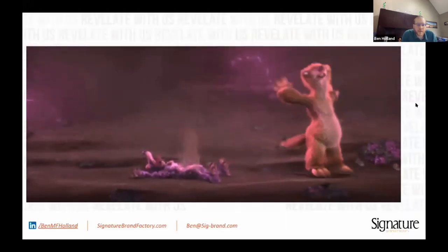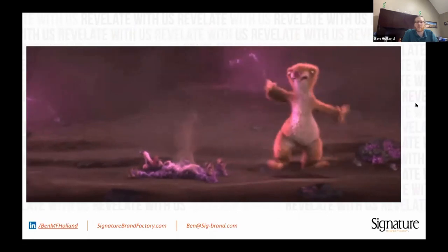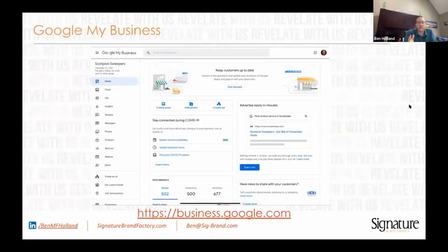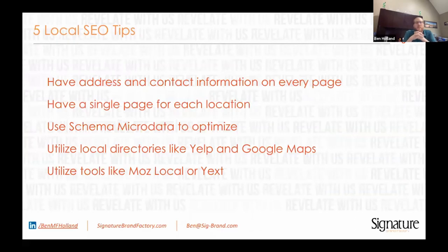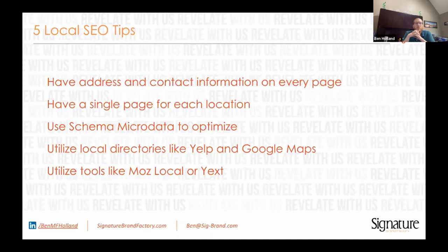I'd like to talk about my lightning round — just a few products I feel like everybody should know about. If you have a business, you should be set up on Google My Business — it helps with local SEO and is a good way to show up in Google Maps. Some local SEO tips: have your address and contact information on every single page, preferably in the footer; have a single page for each location; use schema micro data to optimize your website; use local directories like Yelp and Google Maps to increase local links; and utilize tools like Moz Local and Yelp to be syndicated across the web.